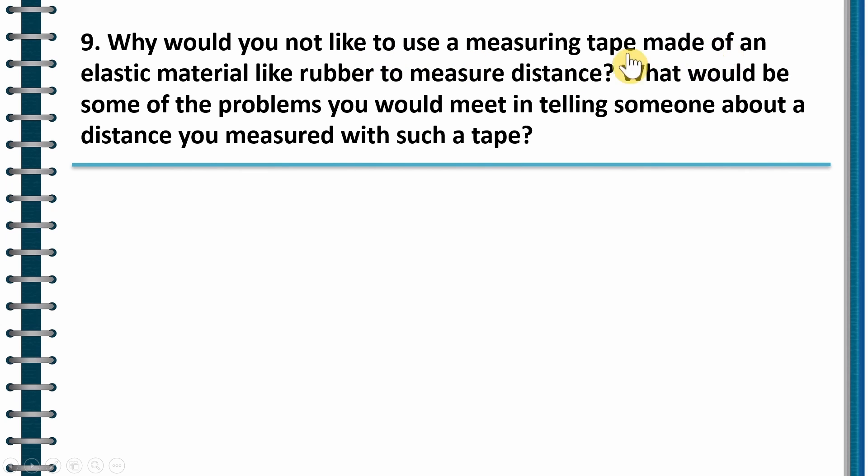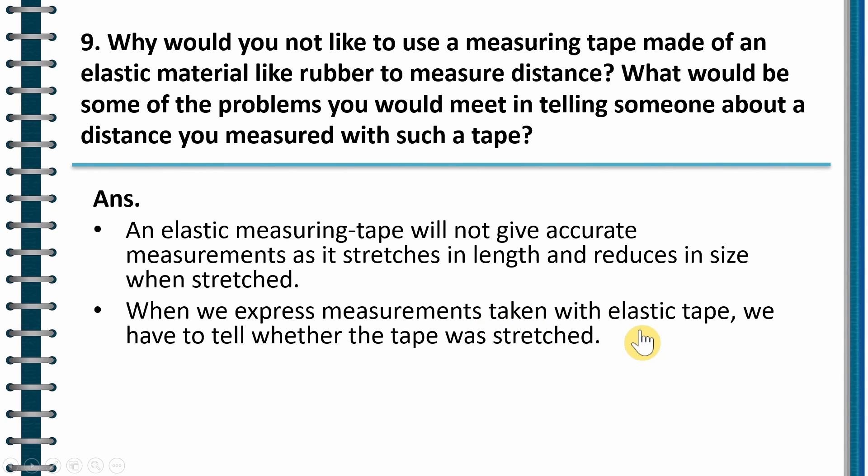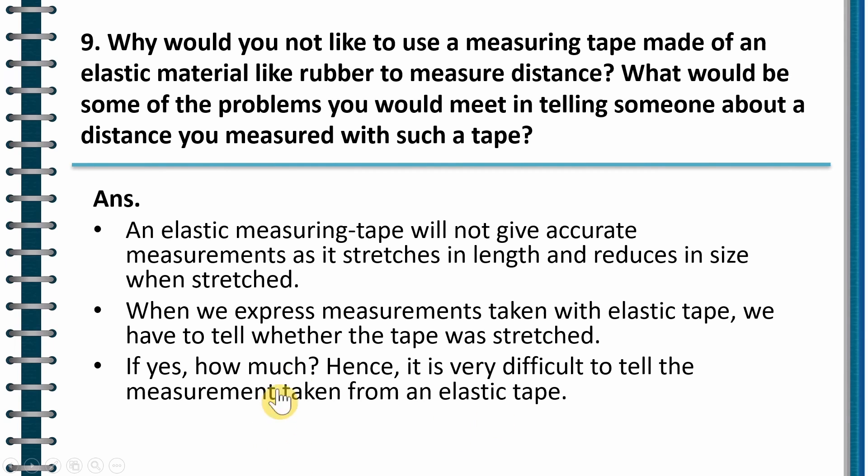Next question: Why would you not like to use a measuring tape made of an elastic material like rubber to measure a distance? What would be some of the problems you would meet in telling someone about the distance you measured with such a tape? So this is what you can write. An elastic measuring tape will not give accurate measurement as it stretches in length and reduces in size when stretched. So the length is increased and the size is reduced. So this is one problem. When we express measurements taken with elastic tape, we have to tell whether the tape was stretched or not. If yes, how much? Hence, it is very difficult to tell the measurement taken from an elastic tape. I mean, how much of the tape was stretched? This will also tell you, which will be very complicated and very difficult. That's why it is not preferred. We don't use elastic tape.